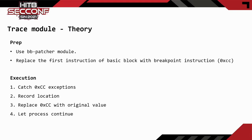Next, I will introduce the implementation of the trace module. First, we use the binary patch to replace the first instruction of each basic block in the executable file with a breakpoint instruction. Then, we use the trace module to start the program. The trace module will process the breakpoint events and record the PC register. When the breakpoint is triggered, it will replace the breakpoint instruction with the original instruction and let the program continue. In this way, we can get all basic blocks that have been executed. Therefore, the trace module in TrapFather is actually a simple debugger.